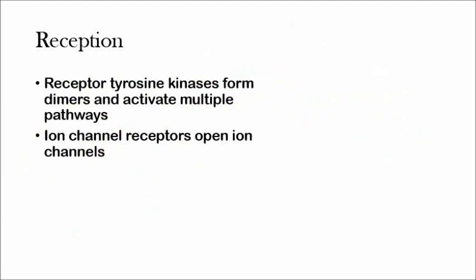The next two types are receptor tyrosine kinases and ion channel receptors. Receptor tyrosine kinases sound difficult, but I'm going to break this down. It's a receptor that receives a signal. Tyrosine is an amino acid that can become phosphorylated, which is important to its function. A kinase is any protein that acts as an enzyme to phosphorylate another protein. So a receptor tyrosine kinase uses tyrosine, receives signals, and phosphorylates other proteins. They form dimers with each other and can activate multiple pathways, not just one.